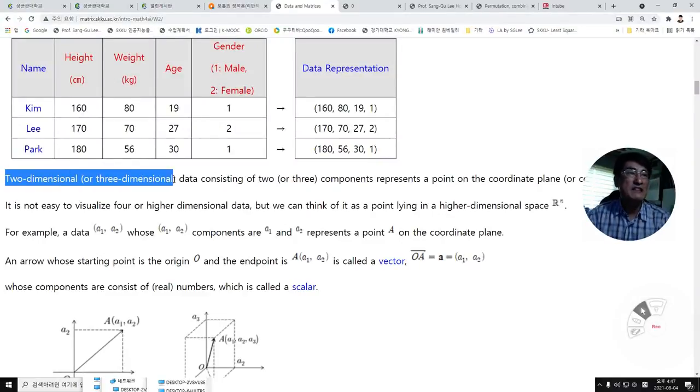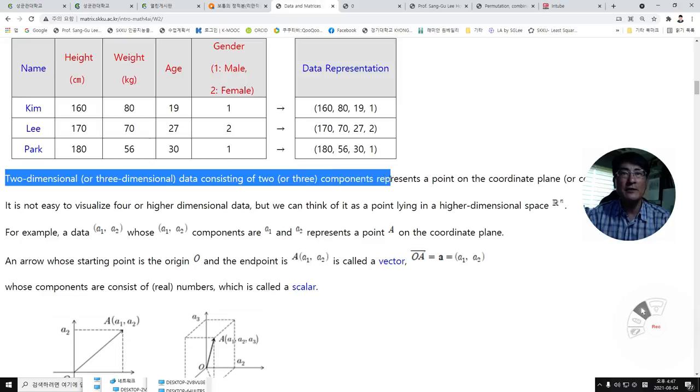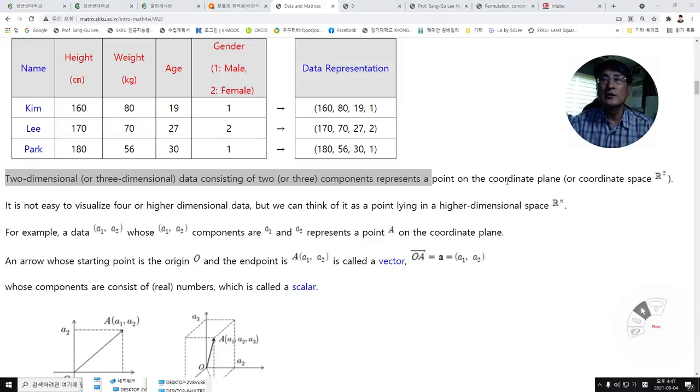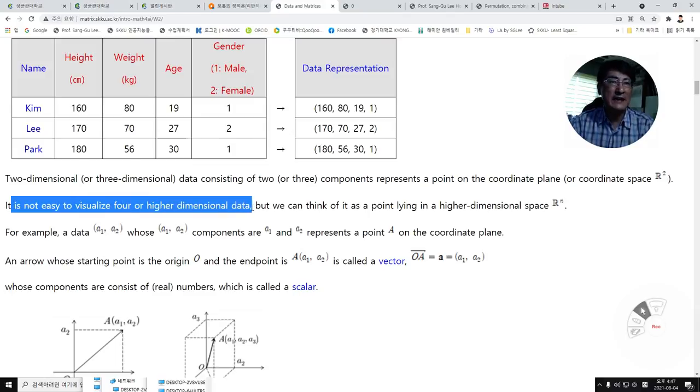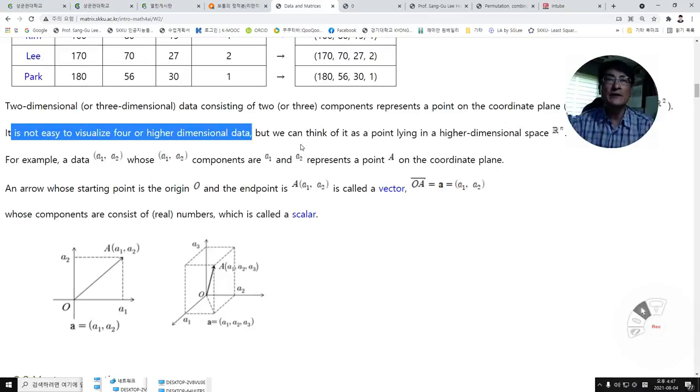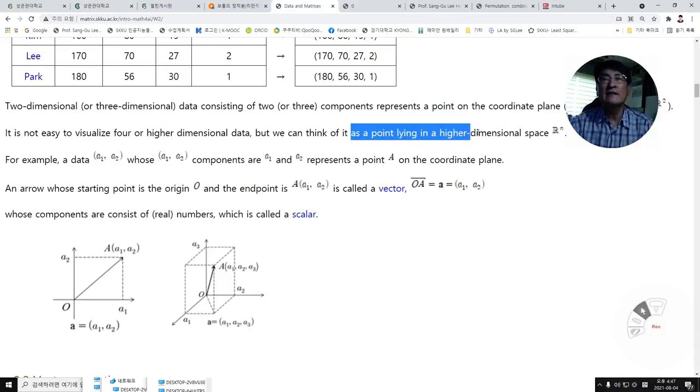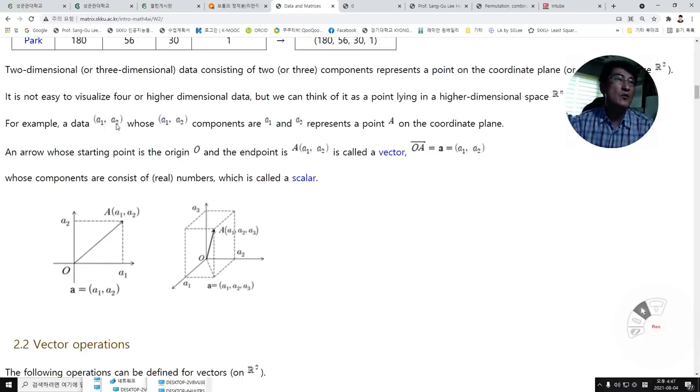Two-dimensional or three-dimensional data consisting of two or three components represent a point on the coordinate plane or coordinate space, R² or R³. It is not easy to visualize for higher dimensional data, but we can think of it as a point lying in a higher-dimensional space Rⁿ. For example, (A₁, A₂) whose components are A₁ and A₂ represent a point A on the coordinate plane.